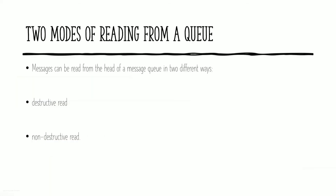There are two ways of reading from a message queue: destructive read and non-destructive read. Destructive read means when a task reads the message from the message queue, it takes that message away and the copy is no longer present in the queue. Non-destructive read means even after the task reads the message, a copy of the message remains in the queue for some time — the content is still present in the queue after reading.